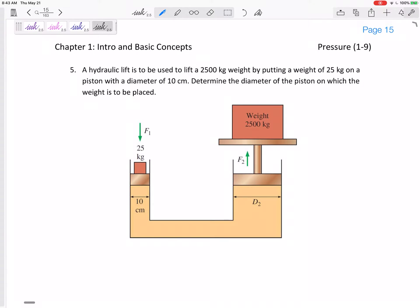All right, so let's look at this hydraulic lift. It tells us a hydraulic lift is used to lift a 2,500 kilogram weight by putting a 25 kilogram mass on a piston that has a diameter of 10 centimeters. Determine the diameter of the piston on which the weight is to be placed.